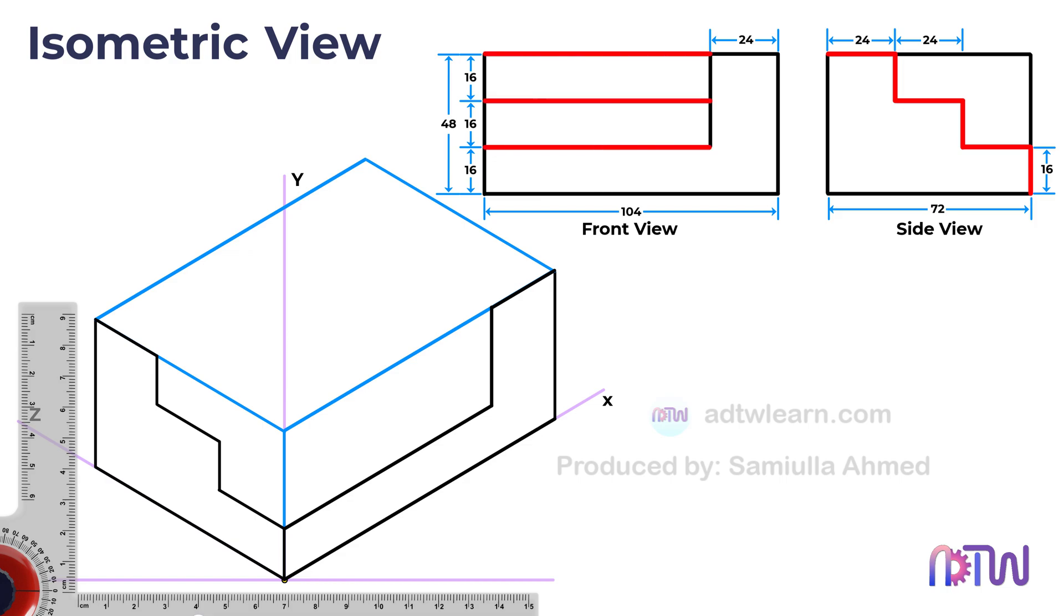The lines in the front view represent these points in the side view, which in turn represents these points in the isometric view. To draw these lines, we need to find their length in the front view.